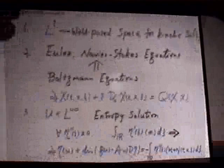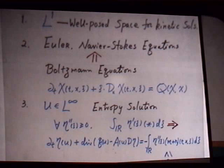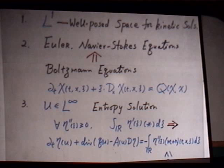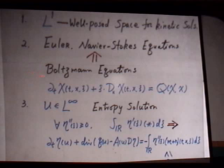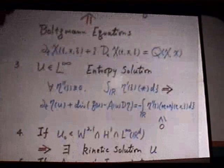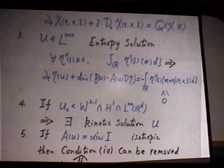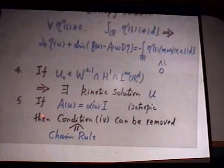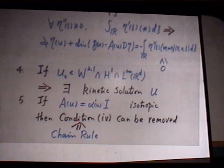L^1 is a well-posed space for kinetic solutions. At the macroscopic level, one cannot always define the solution when the flux function grows faster than linear, because the product does not make sense. However, at the kinetic level, for any u in L^1, the kinetic equation makes sense — this follows the general philosophy from kinetic theory that the kinetic equation describes the macroscopic equation. Also, the diffusion term requires: (1) the divergence of β(u) in L^2, and (2) a chain-rule product law for β and ψ. For the isentropic case the chain rule condition can be removed.